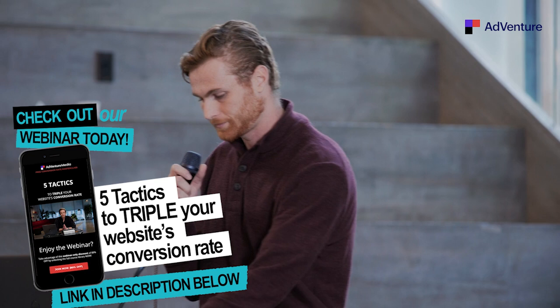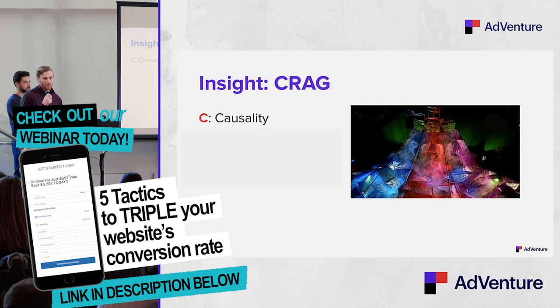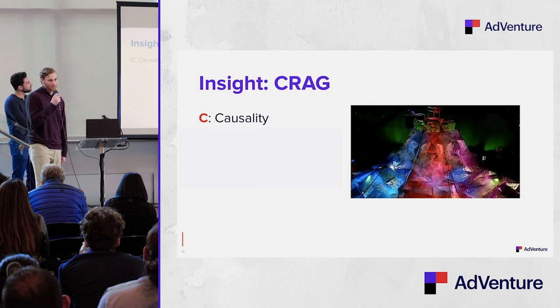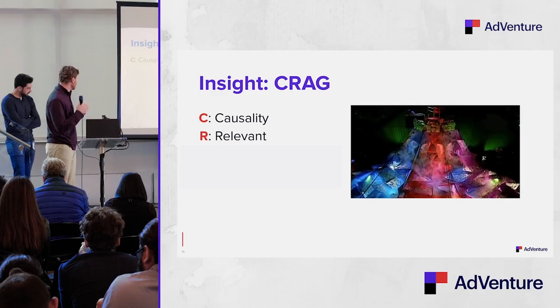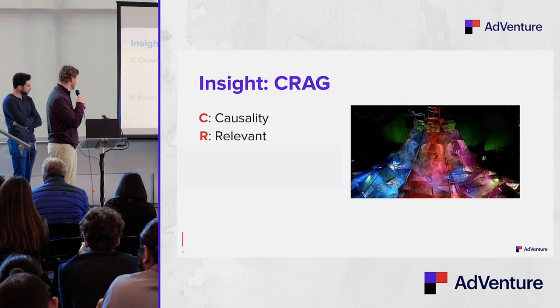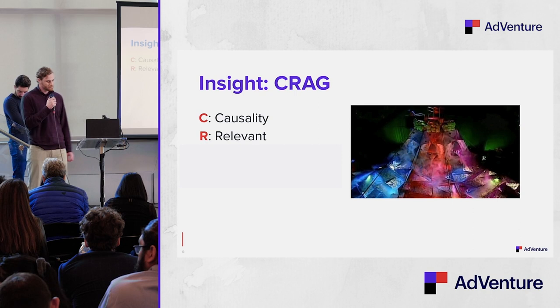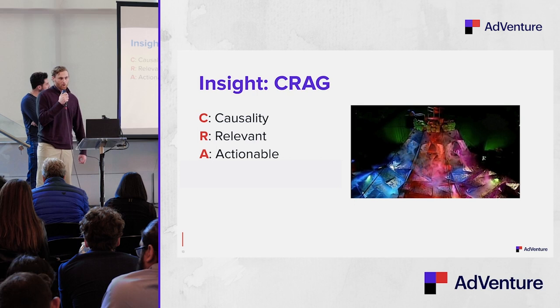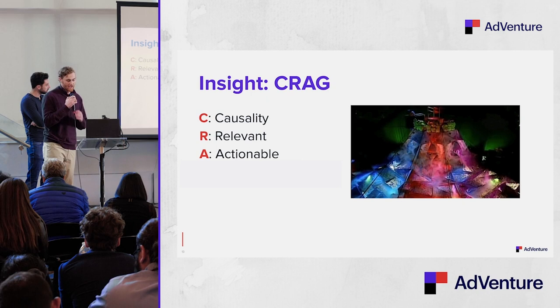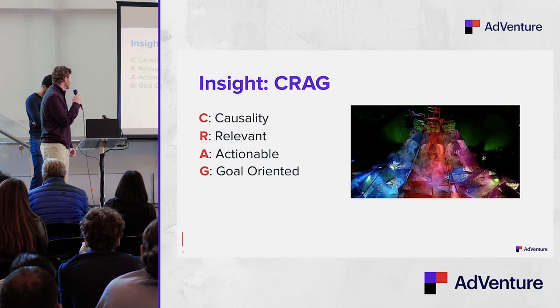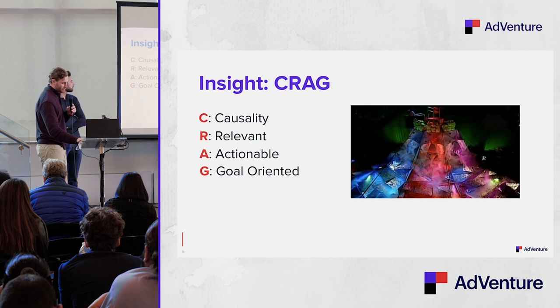We break it down through an acronym called CRAG — inspired by the event from the early 90s Nickelodeon show Guts. C stands for Causality: how does the change in one variable affect another — for example, how does changing a keyword to broad match affect cost per click or conversion rate? R is Relevant: how reliable and significant is the data? A is Actionable: can account managers find insights and take clear next actions? G is Goal-oriented: it has to have a purpose and solve a problem. Fitting that the CRAG trophy was shaped like an area chart.